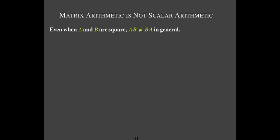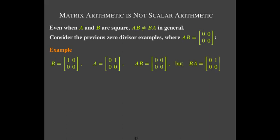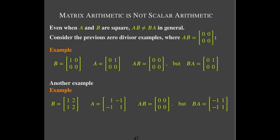Let's revisit our zero divisors. We had two pairs of matrices where their product was zero. For the first pair, we know A times B is zero, but if I form B times A I get (0, 1; 0, 0) — a non-zero matrix. So A times B is different from B times A. The same holds in the second example: A times B is the zero matrix, but B times A gives a rank-1 matrix.